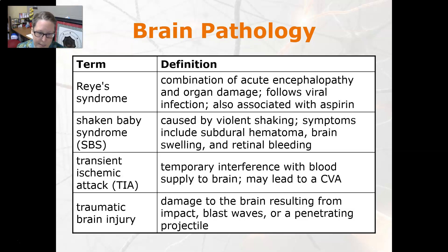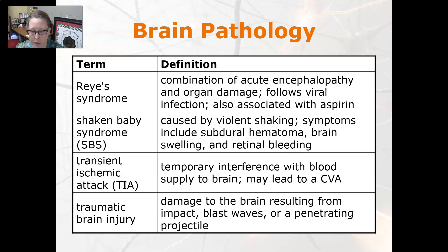A transient ischemic attack, or TIA, is a temporary interference with blood supply to the brain. It may lead to a CVA or stroke, and is sometimes called a mini stroke. Traumatic brain injury, or TBI, is damage to the brain resulting from impact, blast waves, or a penetrating projectile.